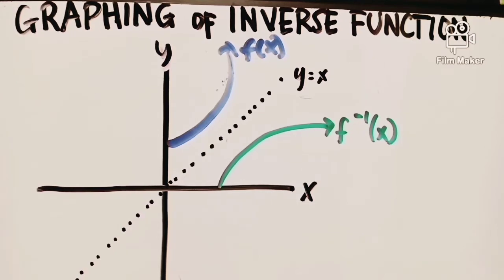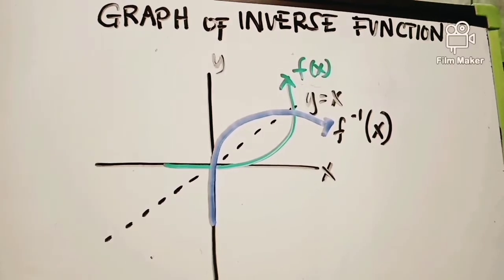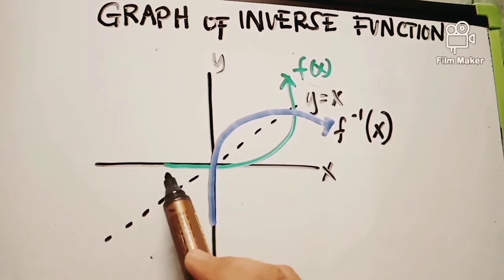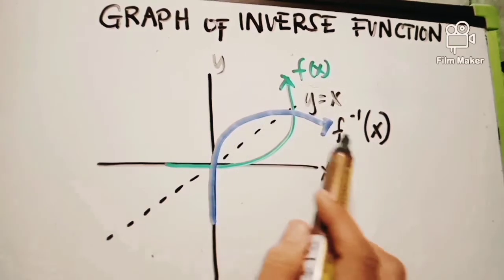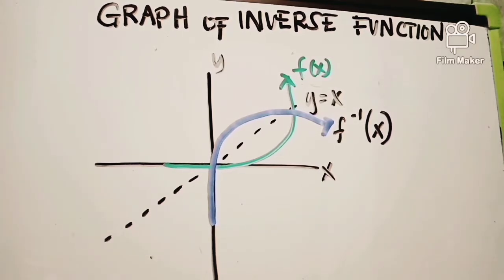I will give another example. Here is my set of examples — I already drew it. This is our given f(x); I drew it like this and labeled it f(x). Whatever length is here, the same length applies here. I flipped it, and this is the inverse function. Later, I will graph the x and y values given, to plot the points, and show the reflection.